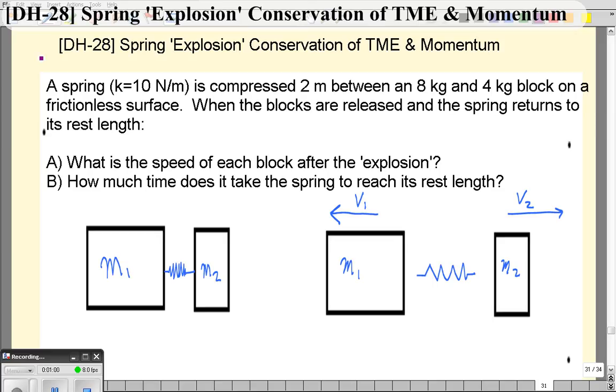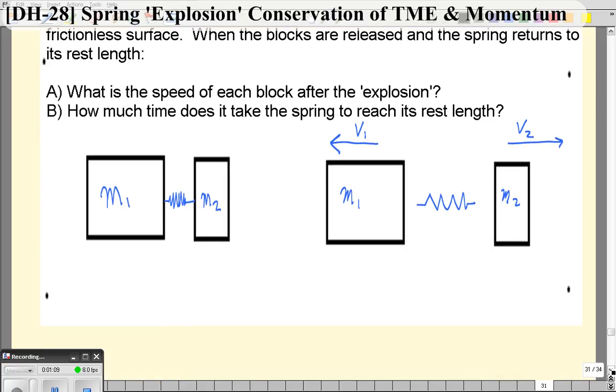So let's look at momentum first. Momentum conservation tells us that before the collision there is no momentum, nothing's moving. So the M1 V1 here, after, has to have a magnitude of momentum that is the same as M2 V2. Normally I like to put primes after velocity, but because there's no velocities before here, I'm just going to leave it as V1 and V2.